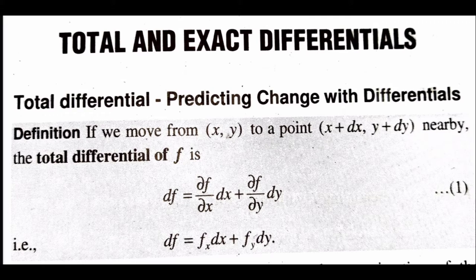The definition is: if we move from (x, y) to a nearby point (x + dx, y + dy), then the total differential of f is df = (∂f/∂x)dx + (∂f/∂y)dy. This is equation number one. That is, df = fx·dx + fy·dy, where fx denotes ∂f/∂x and fy denotes ∂f/∂y.